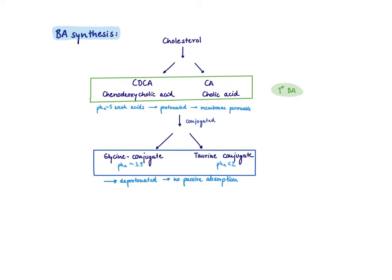If something is passively reabsorbed everywhere, we cannot concentrate it at a specific spot where we need its function. So what our body does is conjugate the bile acids with either glycine or taurine amino acids to make them stronger acids with a lower pKa. The consequence is they're going to be deprotonated, they're going to be charged, and no passive absorption is possible. Therefore, we can get them to where we want — the duodenum — and they won't be passively reabsorbed everywhere.